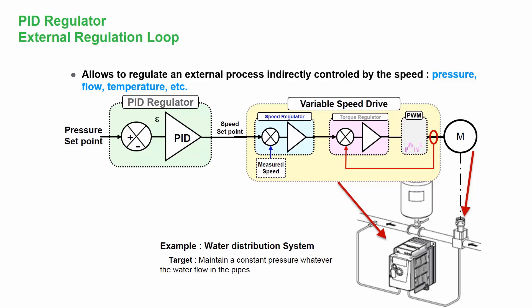The variable speed drive can only see speed set point or torque, but not the pressure. So the input of the PID regulator is a pressure set point and the output is a speed set point. Additionally, we have to connect the feedback to the PID regulator, which would be the pressure sensor from our water distribution system. Now let's go deeper inside PID.